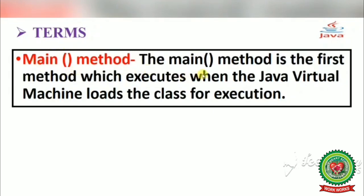The main method is the first method which executes when the Java Virtual Machine loads the class for execution. This means that if we want our Java program to run as a standalone application, it is possible only if our program has the main method. All other methods execute only after the main method runs.